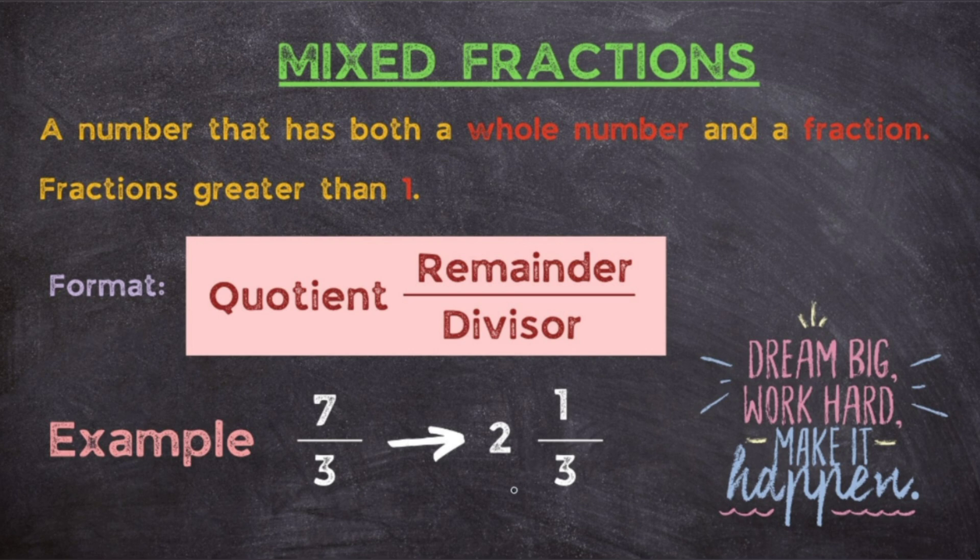By converting it into a mixed fraction, which is over here you can see 2 and 1 upon 3, in which 2 is the whole number and there is a fraction which is 1 upon 3. Now in this, 2 will be the quotient. See here, the format is given: it will be in the form of quotient, the upper number that is the numerator will be the remainder, and the denominator will be the divisor.